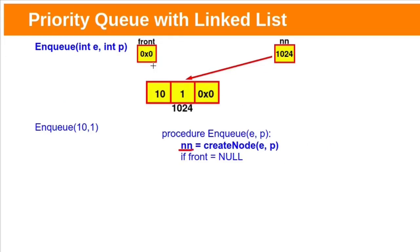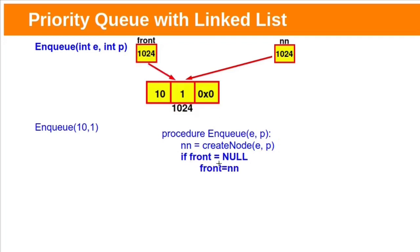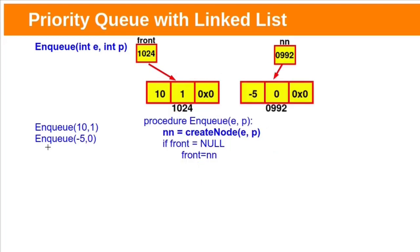In the enqueue function, this new node pointer will point to the newly created node. Initially, the global variable front will be null, meaning the priority queue is empty. Since this is the first node and front is null, we make this new node the front by assigning front with the new node's address. Now front is pointing to this new node.